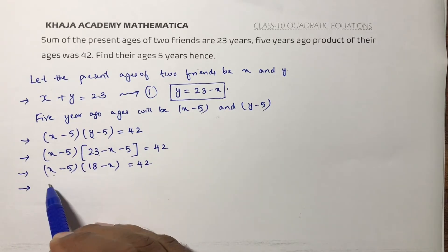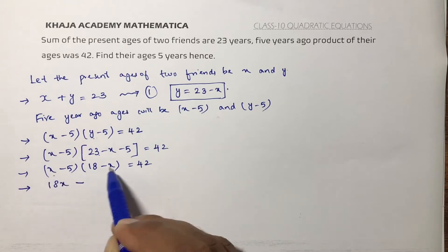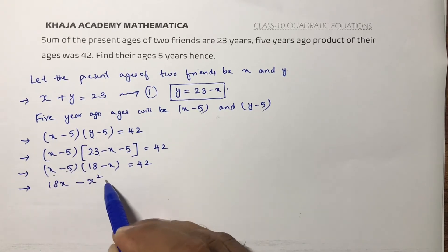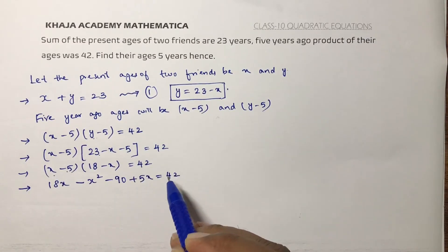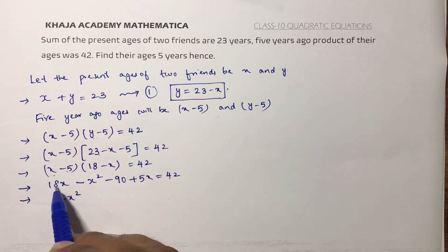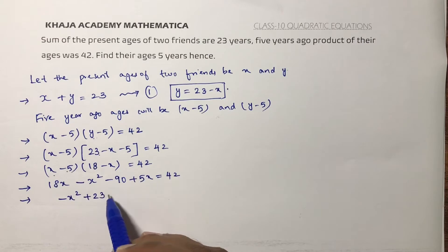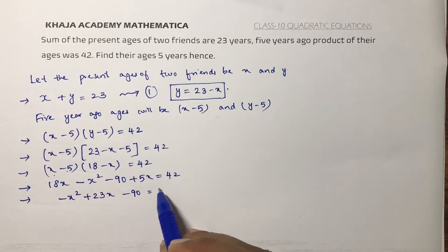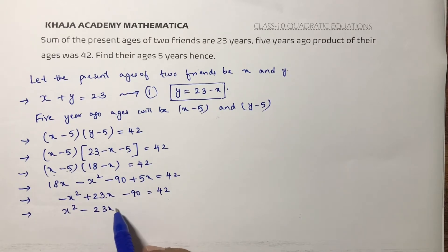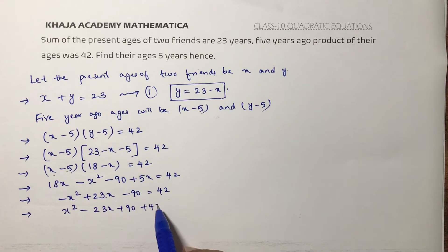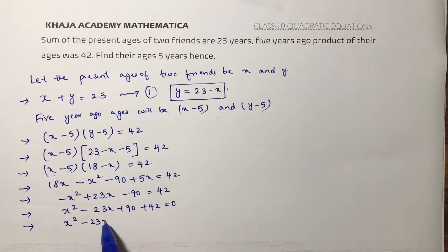Before multiplying, simplify: 23 minus 5 is 18, so we have x minus 5 into 18 minus x equals 42. Expanding: 18x minus x squared minus 90 plus 5x equals 42, which gives x squared minus 23x plus 90 equals negative 42. Transposing all values: x squared minus 23x plus 132 equals 0.